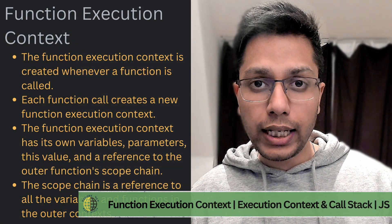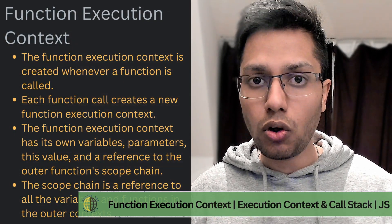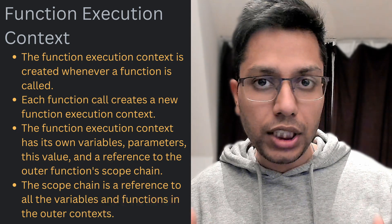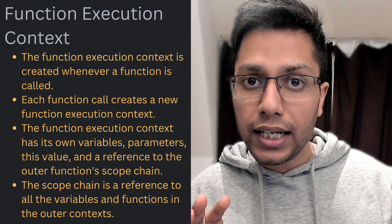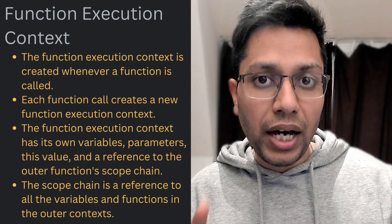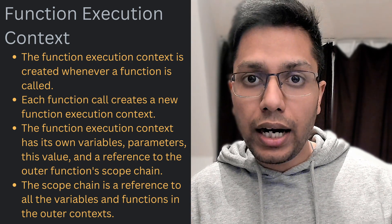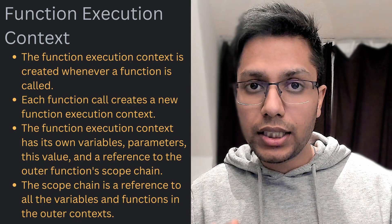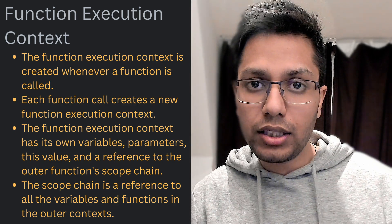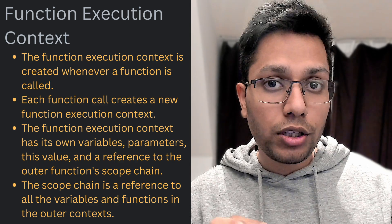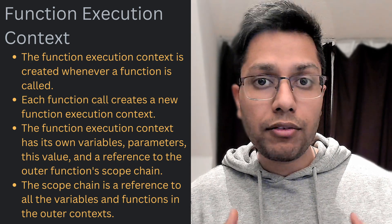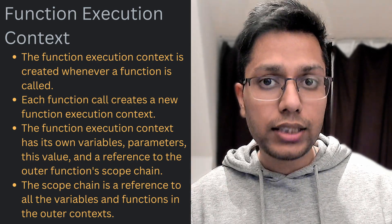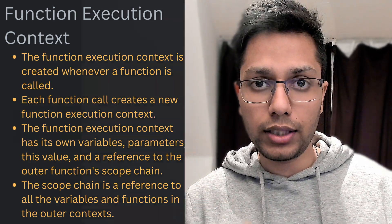The function execution context is created whenever a function is called. Each function call creates a new function execution context which has its own variables, parameters, this value, and a reference to the outer function's scope chain. You can think of the scope chain as all the variables and functions in the outer context, its outer context, and so on until the global context.